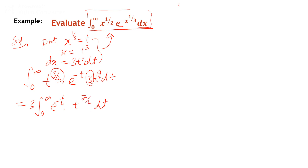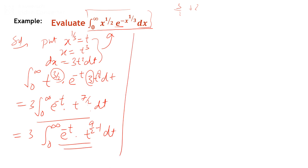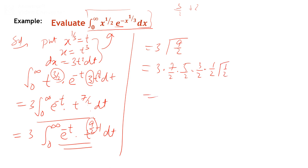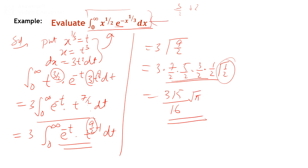Comparing with the gamma function, 7/2 is written as 9/2 minus 1, so we get 3·Γ(9/2). Expanding: Γ(9/2) = (7/2)·(5/2)·(3/2)·(1/2)·Γ(1/2). Simplifying, we get 315/6 times √π, so the value of the integral is (315/6)·√π.